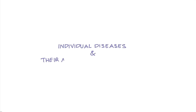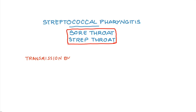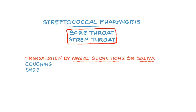Now that we understand the categories of diseases, let's look at each disease one by one and see how to approach their management. The first disease to discuss is streptococcal pharyngitis, or strep throat, which alone causes up to 7 million medical visits in the U.S. on a yearly basis. The pathogen is transmitted from person to person through nasal secretions or saliva.